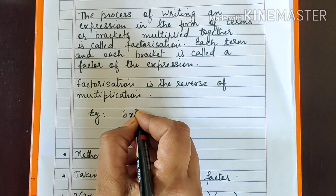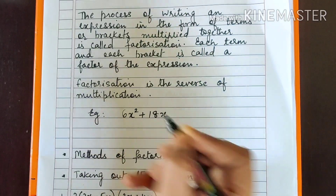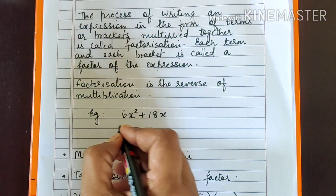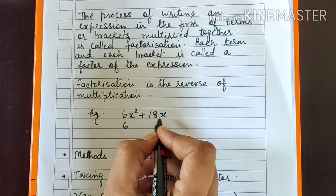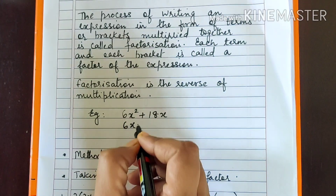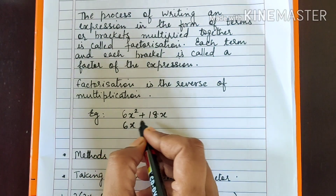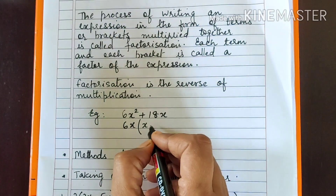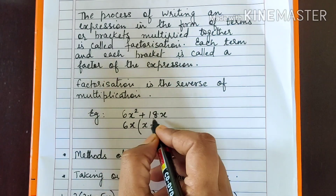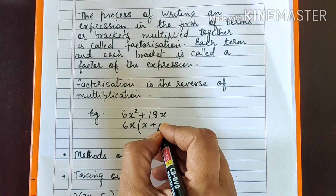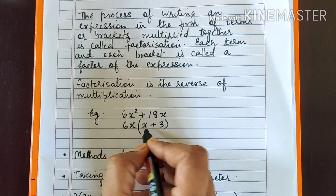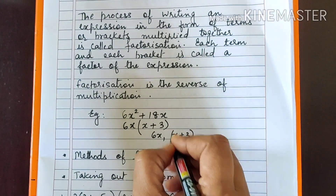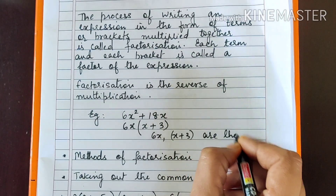Now I will show you one example: 6x² + 18x. If you observe, what is the common factor for 6 and 18? It is 6. For x² and x, it is x. So if you take 6x as a common factor and remove it, from the first term you are left with x, and from 18x, if you remove 6x, you are left with 3. So you get 6x(x + 3). These are the factors of the given expression.